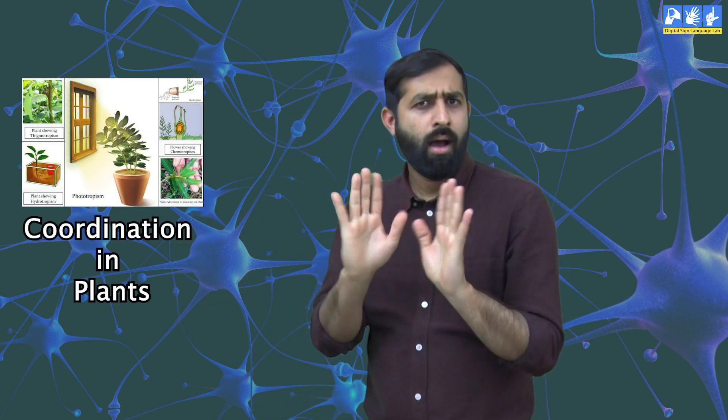In the previous videos of this chapter, we have discussed about the cells, tissues and nerves in our body, how internal organs are controlled and coordinated and how reflex action happens. In this video, I am going to tell you about coordination in plants.